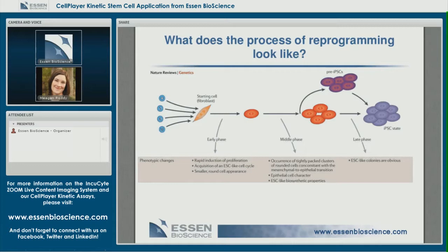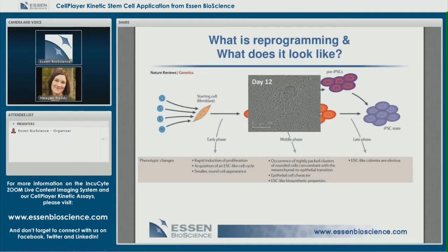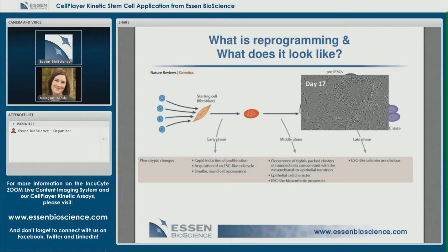This begins the early phase of reprogramming where cells rapidly proliferate and appear more round and smaller. During the middle phase, those small round cells form tightly packed clusters, which then become the colony shape typical of an embryonic stem cell colony. Fully reprogrammed true iPSCs and human embryonic stem cell colonies are indistinguishable from each other in culture, and Zoom has successfully captured those morphological changes classic to the stages of reprogramming.